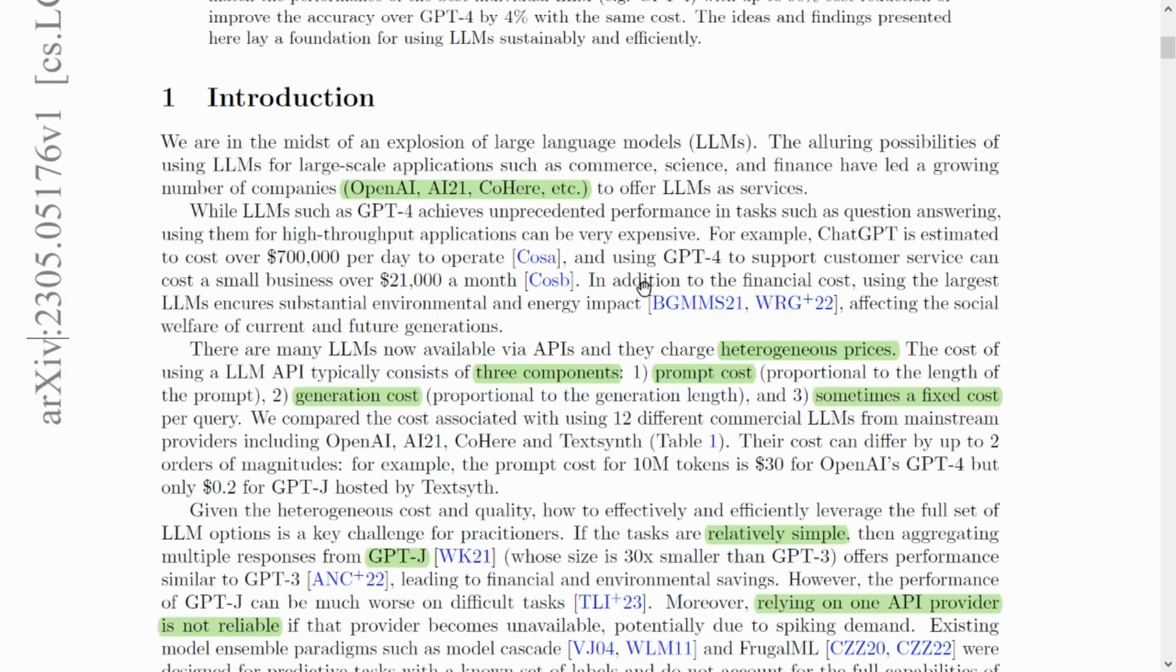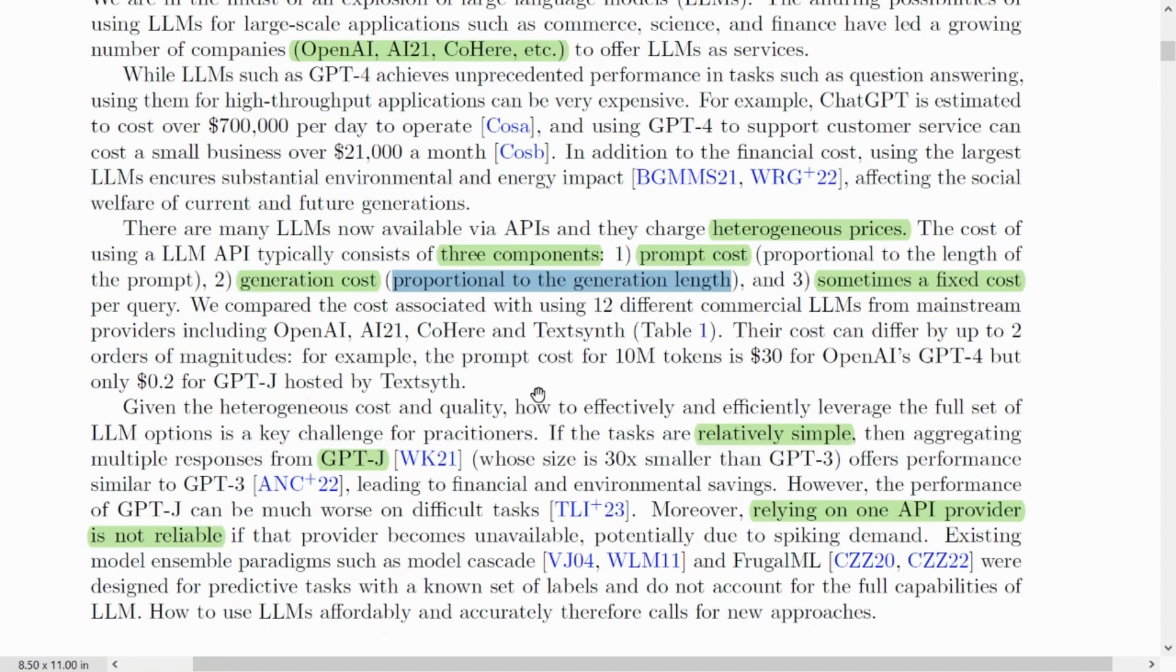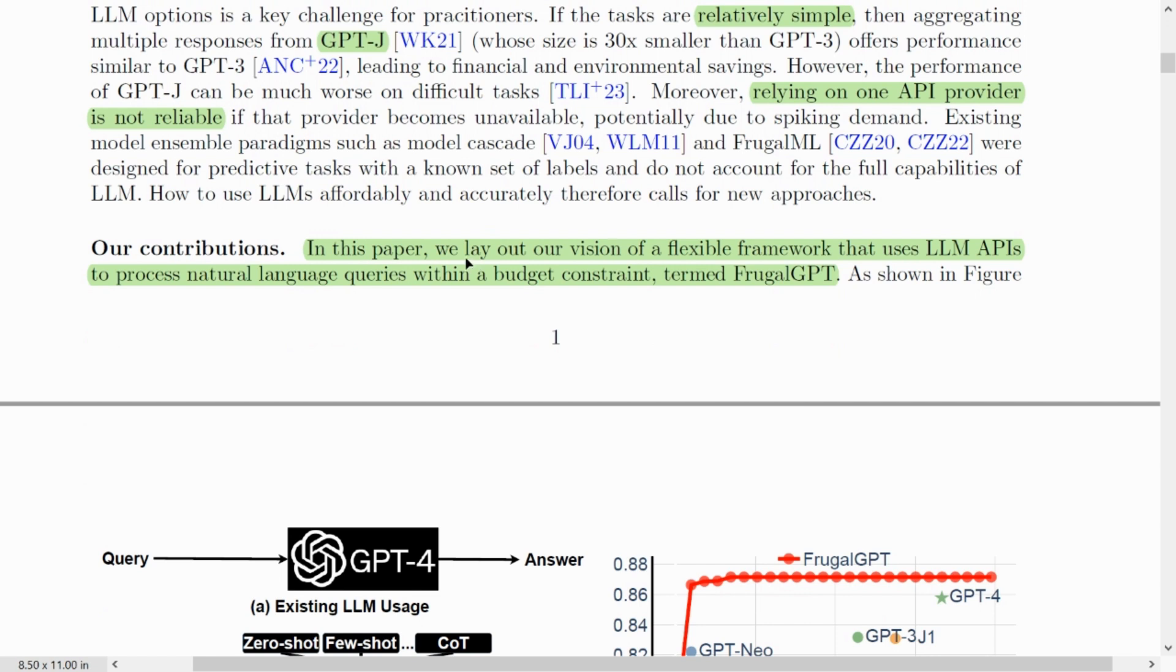Now, as we've already seen in the first diagram, the price of any LLM has three components. The first is the prompt cost, which is proportional to the length of the prompt. Next is the generation cost, which is proportional to the length of the generated output. And there is fixed cost per query. For example, the prompt cost of 10 million tokens is $30 for OpenAI's GPT-4, but only $0.20 for GPT-J hosted by TextSynth. In this paper, they have laid their vision on a flexible framework that uses different LLM APIs to process natural language queries within a budget constraint. And the method or framework that they have termed as FrugalGPT.